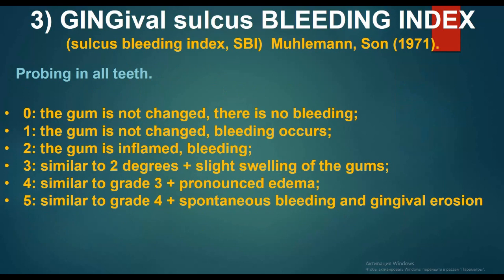Probing in all teeth: Grade 0 — gum is not changed, no bleeding. Grade 1 — gum is not changed, bleeding occurs. Grade 2 — gums in inflammation. Grade 3 — similar to grade 2 plus slight swelling of the gums. Grade 4 — similar to grade 3 plus pronounced edema. Grade 5 — similar to grade 4 plus spontaneous bleeding and gingival erosion.